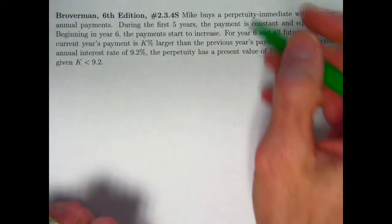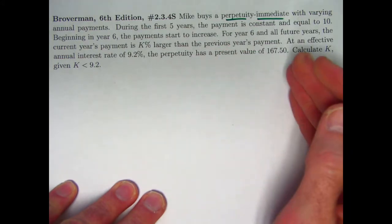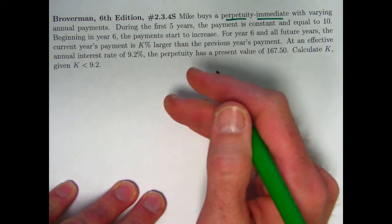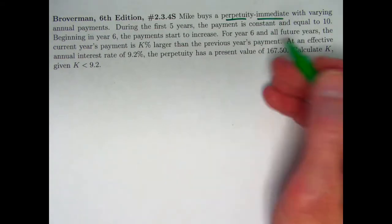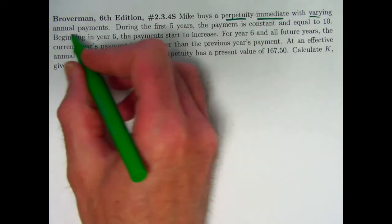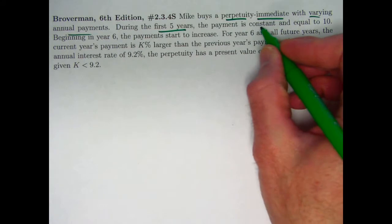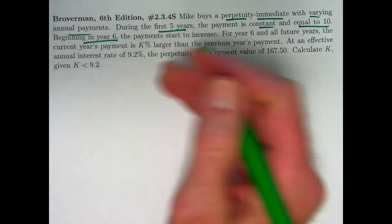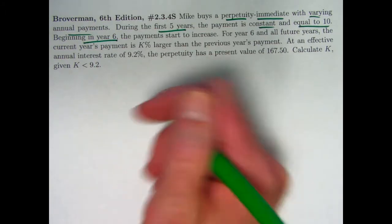So here is the problem. Mike buys a perpetuity immediate. Perpetuity means it's an annuity of a series of payments going on forever. Immediate means we're going to evaluate the present value one year, in this case, before the first payment. It's got varying annual payments. During the first five years they're constant. The first five payments are constant and equal to ten. Beginning in year six, which means with the sixth payment,